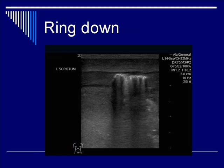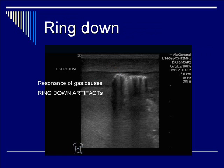Here's an example of ring down in a patient who unfortunately has necrotizing fasciitis in the scrotum. The resonant effect of the gangrenous gas causes this ring down artifact — dirty shadowing distal to the air bubbles. As shown by the red arrows, the dirty shadowing emanates from near field to far field. Unlike comet tails or B-lines in the lungs, these shadows are not clean and not discrete. Because they are dirty shadows caused by gas, we call them ring down artifacts.